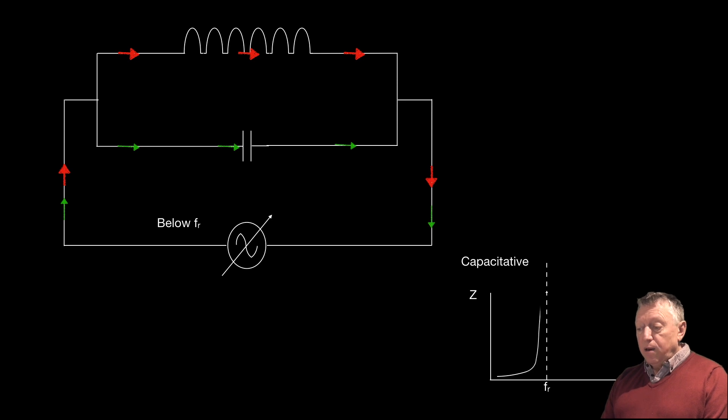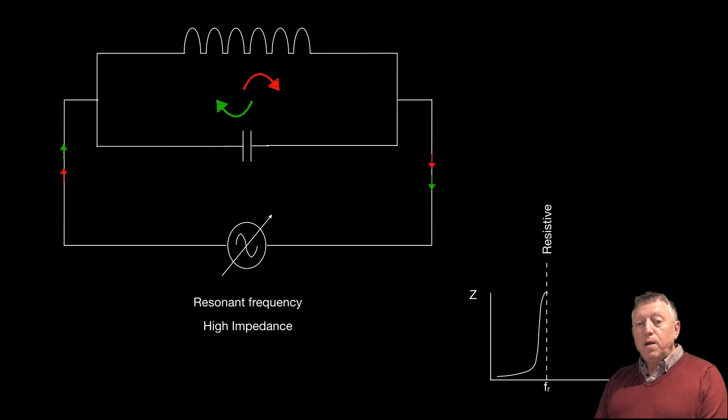And when we get to resonance, we get circulating currents. And these circulating currents make the overall circuit very, very high impedance. And any impedance that is there is resistive. So at that point, I and V, the current and the voltage, are in phase.